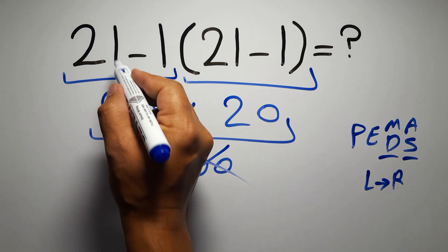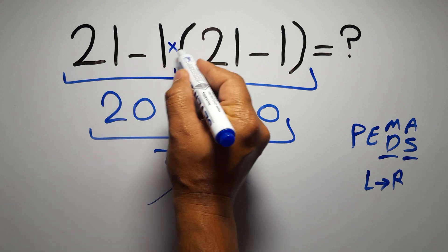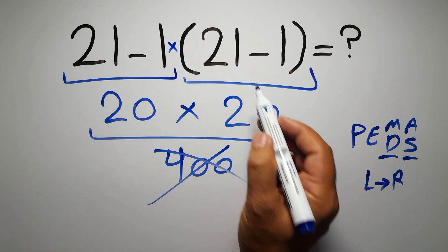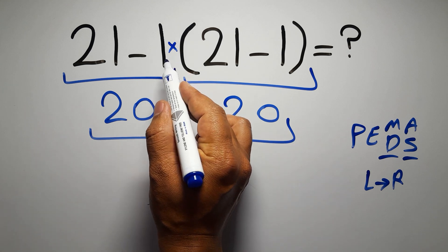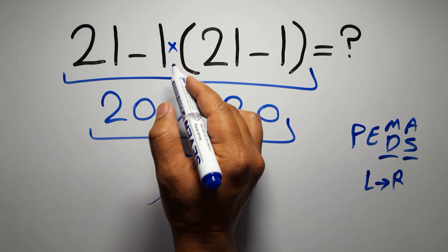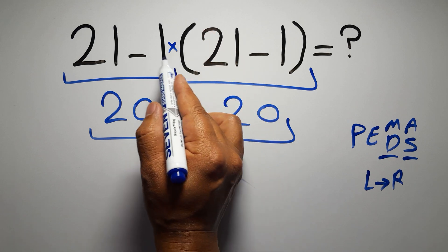In this expression we have one subtraction, one multiplication, and one parentheses. Inside this parentheses we have one subtraction. Here we have a multiplication because in mathematics when a number is placed next to parentheses it means multiplication, and we usually don't write the multiplication sign for brevity.